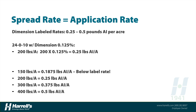As we adjust the spread rate, we can adjust the active ingredient load per acre. If we drop to 150 pounds per acre — 150 times 0.125% — that gives us 0.1875 pounds of active ingredient per acre, which is below the label rate and not a recommended application. But at 400 pounds per acre, we achieve the high label rate of 0.5 pounds of active ingredient per acre. So the spread rate becomes how we adjust our application rate of the herbicide.